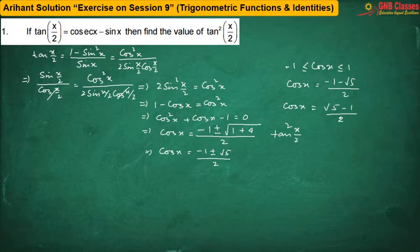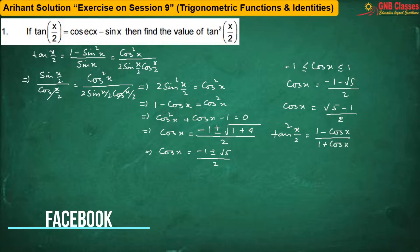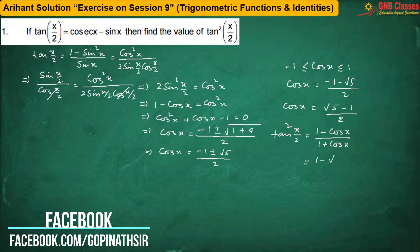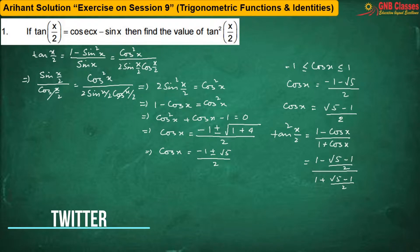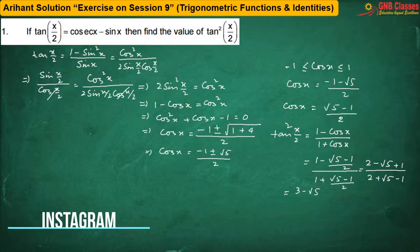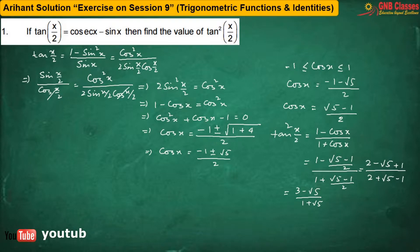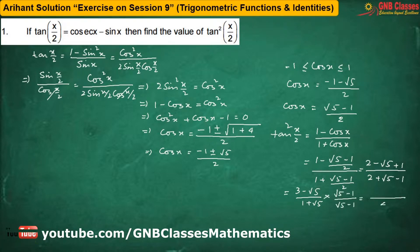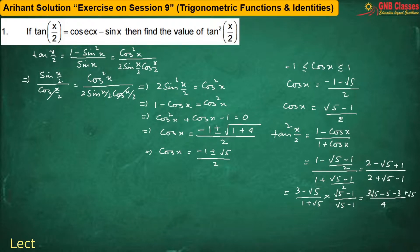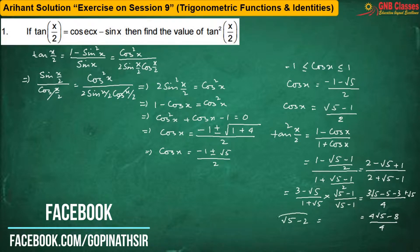Now, tan²(x/2) can be written as (1 − cos x)/(1 + cos x). Now I am replacing the value of cos x. After simplification we are going to get (3 − √5)/(1 + √5). Rationalizing, we get (4√5 − 8)/4.